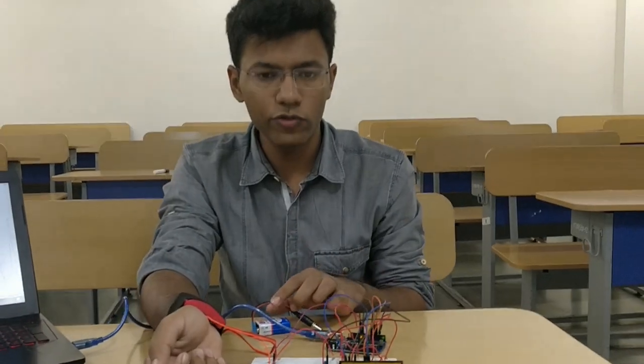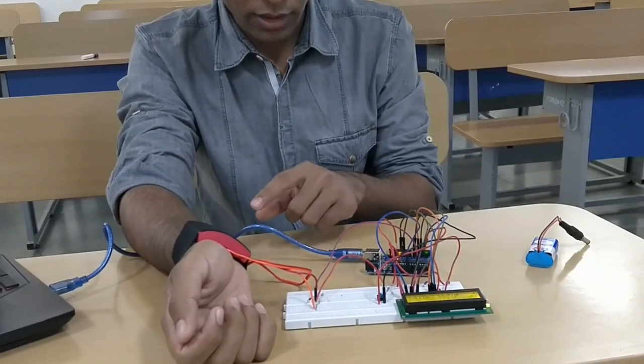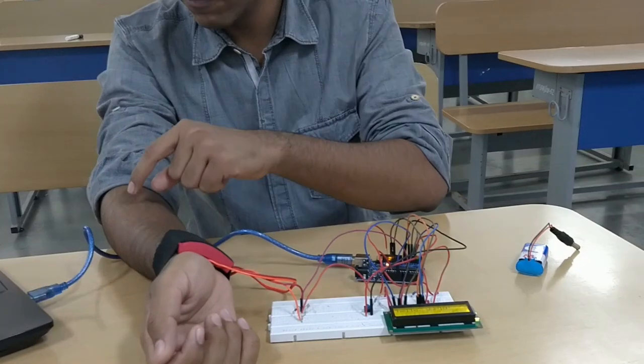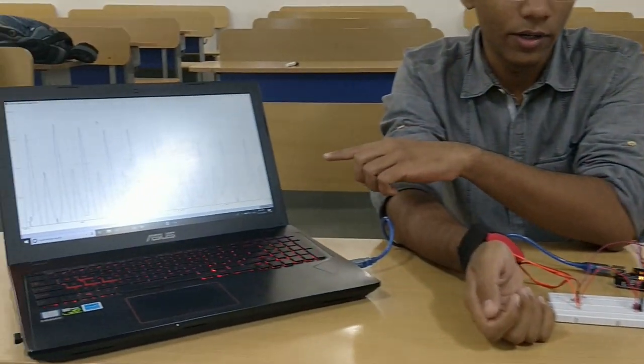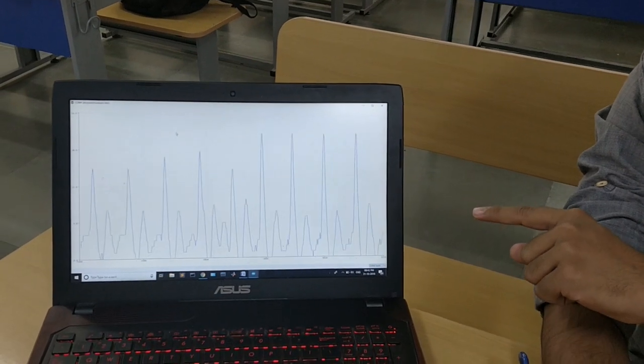Now, if you want to see how your heartbeat looks, remove this 9V battery and connect it to PC in which you have Arduino IDE installed. You can see my heartbeat which has its systolic and diastolic peaks.